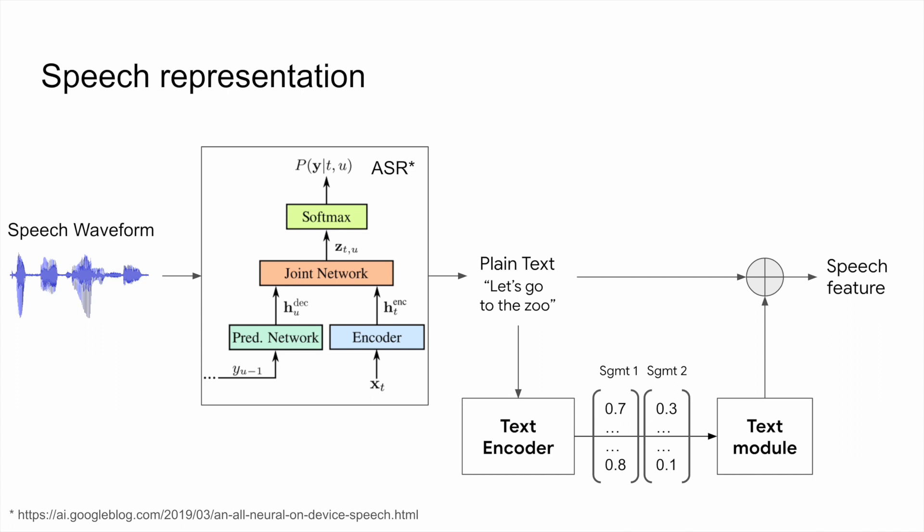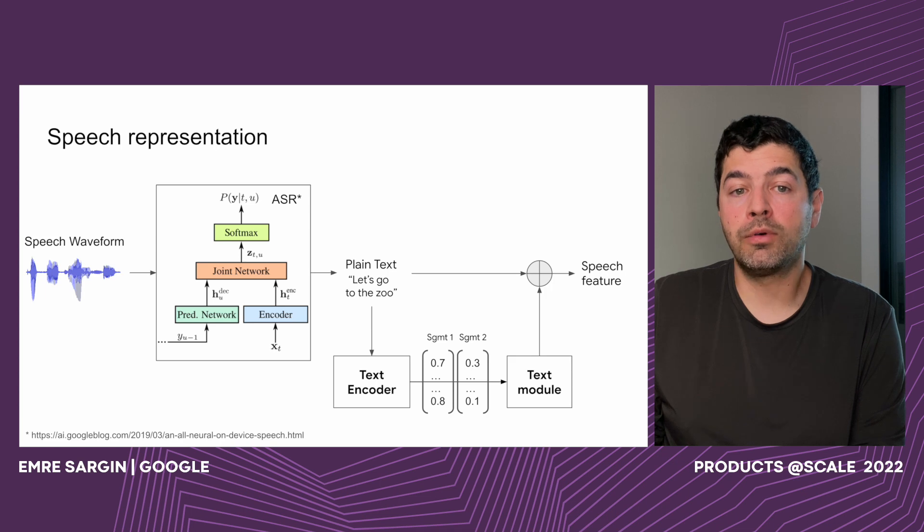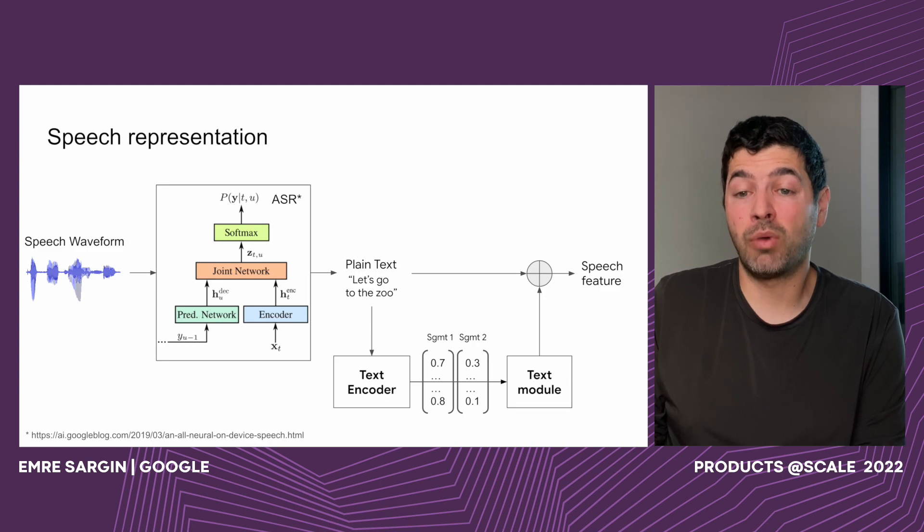The speech module takes the speech waveform as input and applies an automated speech recognition module to get the plain text. Plain text is then passed to the text module to get the segment-level speech representation. We generally find it quite useful to combine the segment-level speech representation with raw plain text tokens in the final representation. This can help the model focus on certain words when needed, which may not be as easy to do with the pre-trained text module.